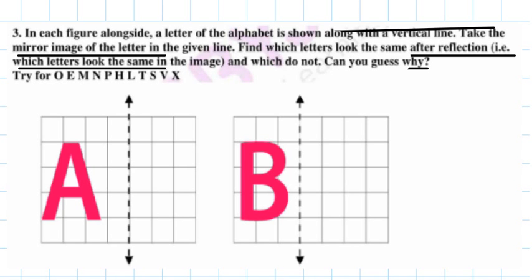Now friends, you can see it has given us A and B, and it is asking us to give their reflections. What does reflection image mean? When you show something in the mirror, what you see in the mirror is its reflection. So you can say it is a mirror image.